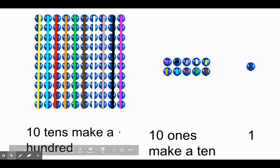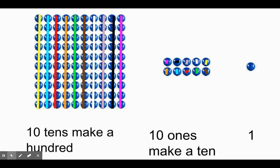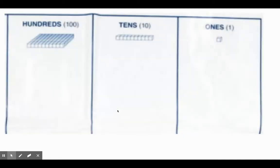Ten tens make a hundred. This is ten, this is ten, this is ten — each of these columns is ten. There are ten columns, so ten tens make a hundred. It also reminded me of this part of a place value mat.